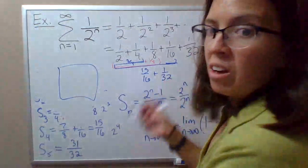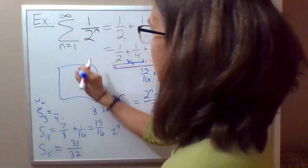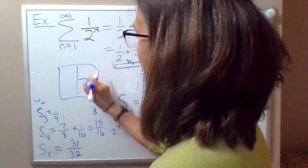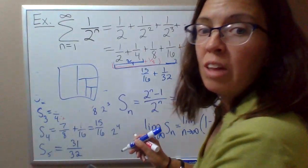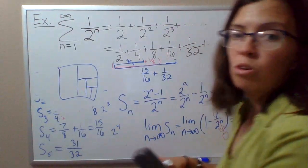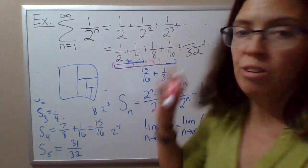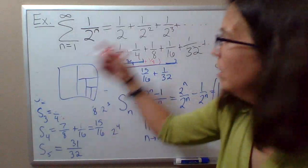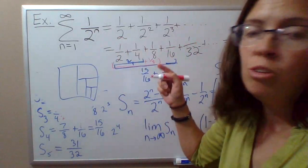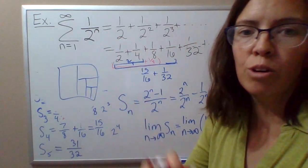So the infinite sums that converge have that sort of behavior, where the piece that you're adding is getting smaller and smaller and smaller. That's one thing that needs to happen in order for these infinite series to converge. That's not enough by itself, but all infinite series that converge do exhibit that behavior.